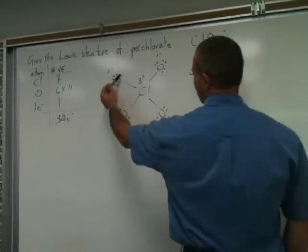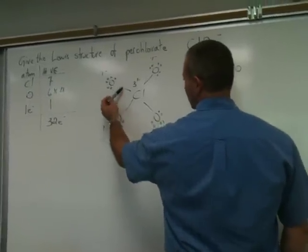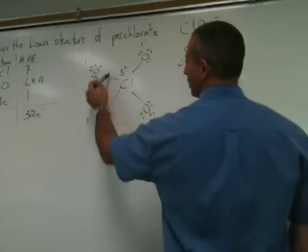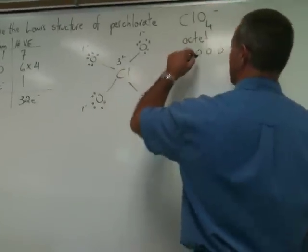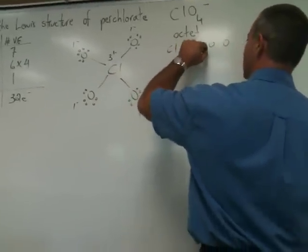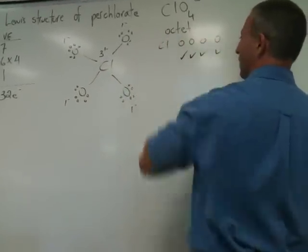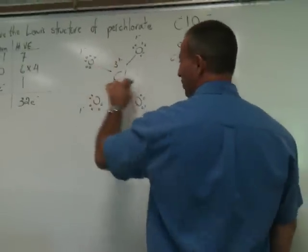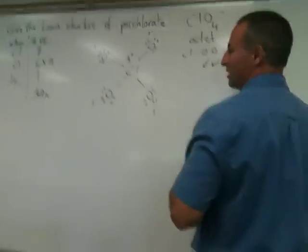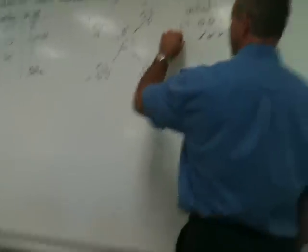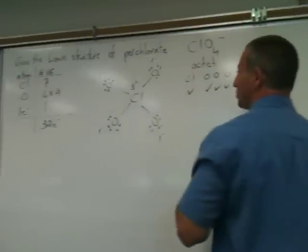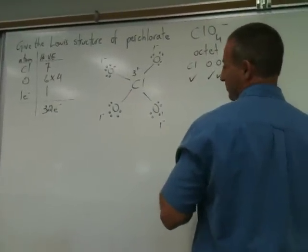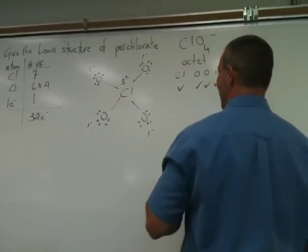Each oxygen atom has a count of 2, 4, 6, 8 — satisfying the octet. All the octets are satisfied with the oxygen atoms. Chlorine also has a satisfied octet. So on that count, the structure is accurate.